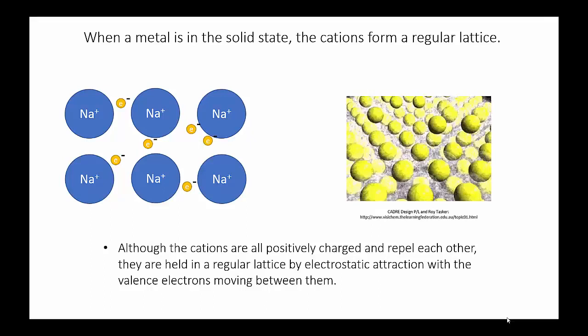If there were nothing else there, these positive ions would repel each other and the lattice would collapse. However, the sea of delocalized valence electrons occupies the space between the positive ions like glue, and the electrostatic attraction between those electrons and the ions holds the lattice together.